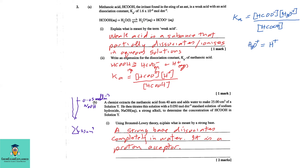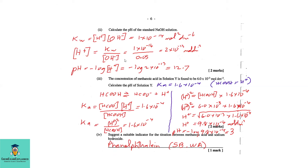Using Brønsted-Lowry theory, explain what is meant by a strong base. A strong base dissociates completely in water and is a proton acceptor. It is very important to include that it is a proton acceptor, because that is the Brønsted-Lowry definition of a base. Part b2: Calculate the pH of the standard sodium hydroxide solution.